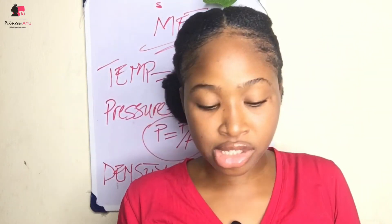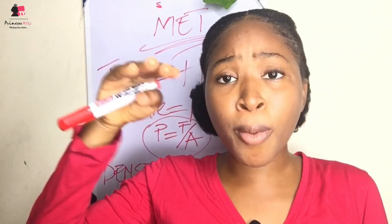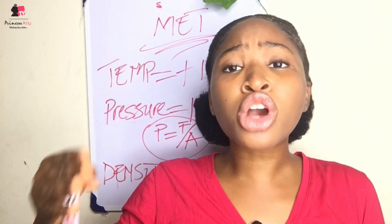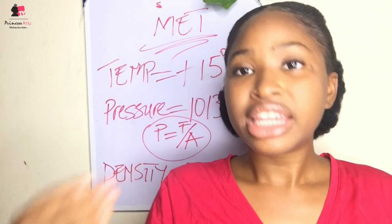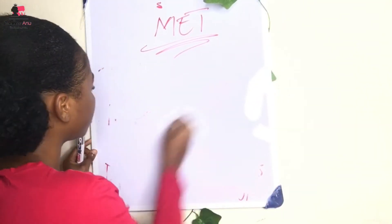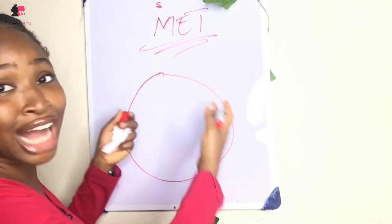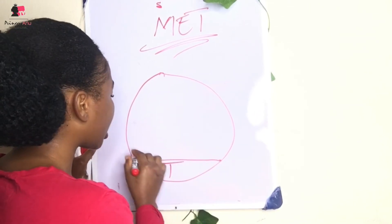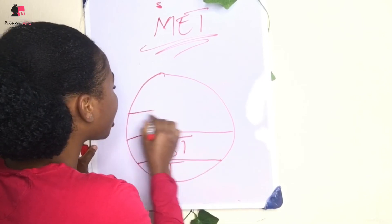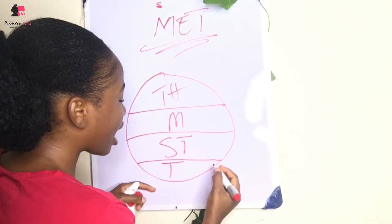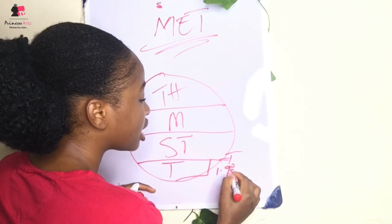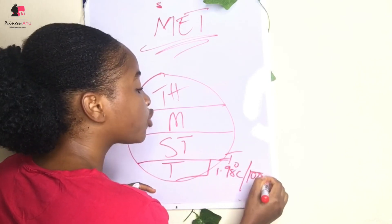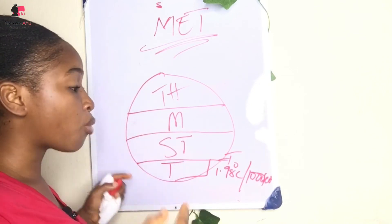From the tropopause, temperature stops decreasing and remains constant. So I keep drawing this diagram because it's the real representation of the atmosphere. We have the troposphere, the stratosphere, the mesosphere, and the thermosphere. From the troposphere up to the tropopause, temperature always decreases by 1.98 degrees Celsius per 1000 feet — for calculation purposes we always use 2 degrees Celsius per 1000 feet.